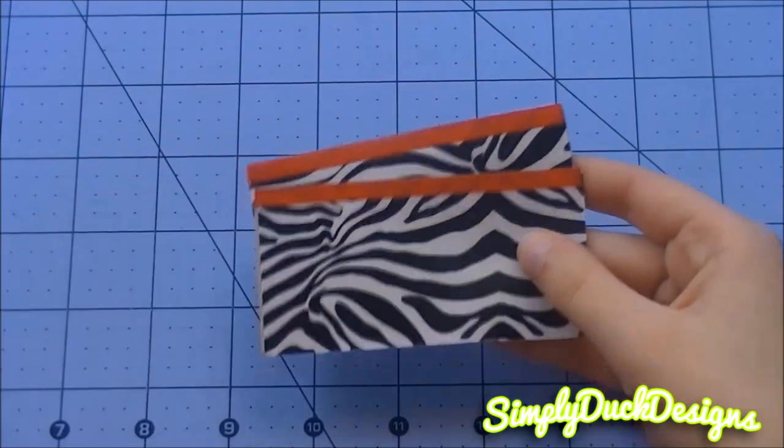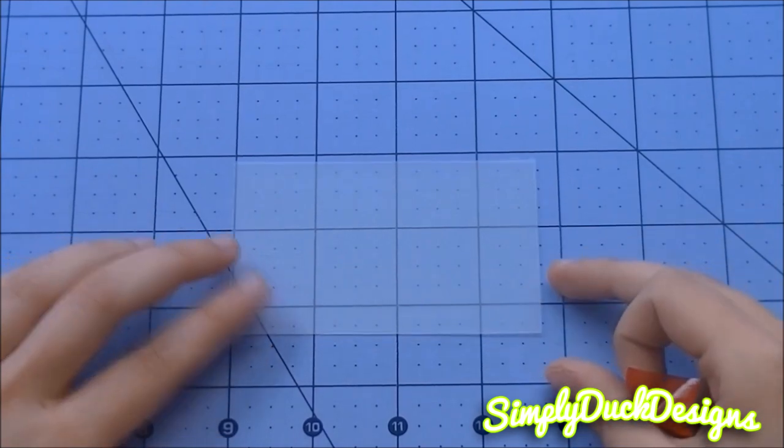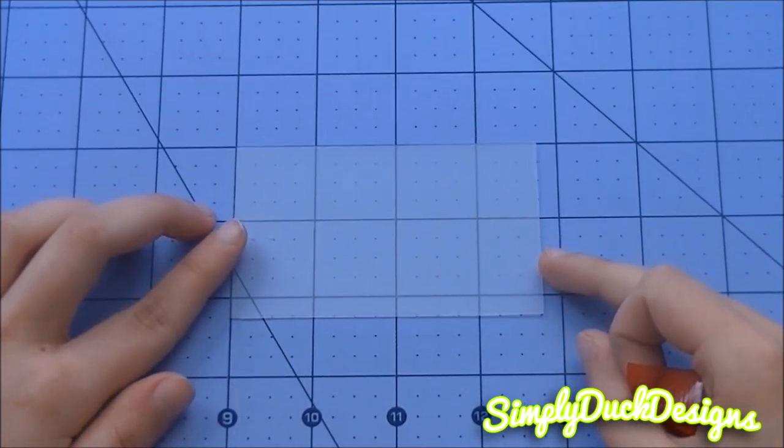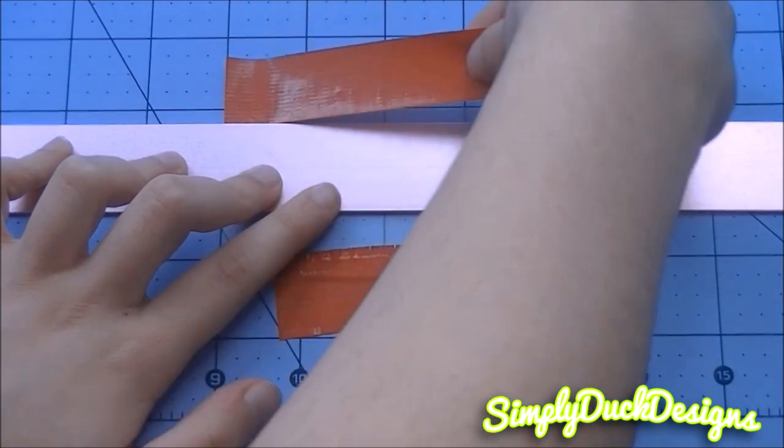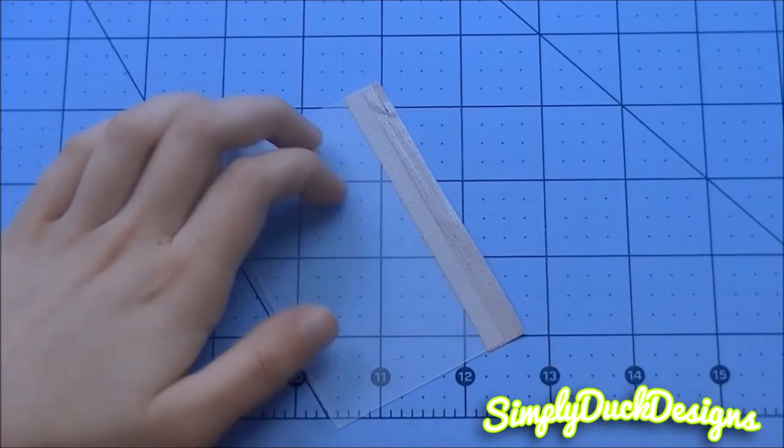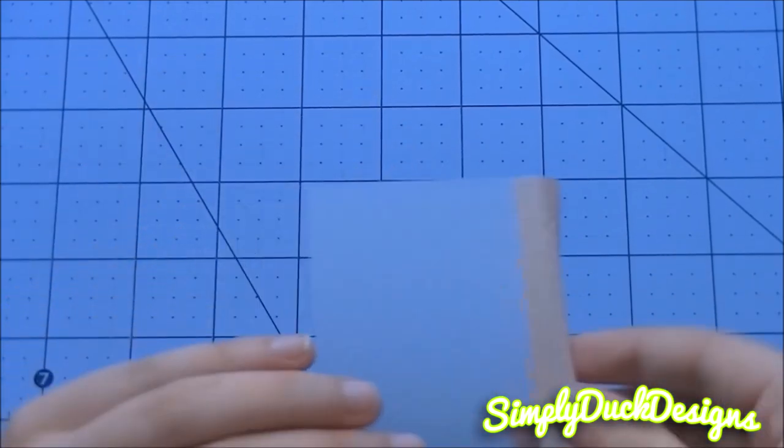Then you're going to want to repeat that step so that way you have 2 credit card pockets. Now I'm taking my ID plastic and I'm doing it basically the exact same way. Now you just want to trim the back. So that way when you fold this over you won't be able to see the stickiness through the other side of the ID.